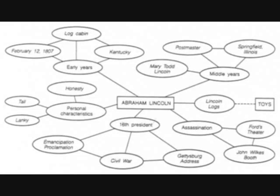In semantic maps, an idea or vocabulary word is the main focus. Strands explain and clarify, and other generalizations, details, inferences, and supports are added.